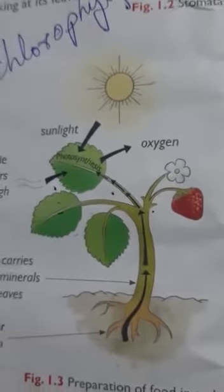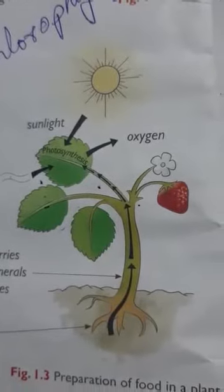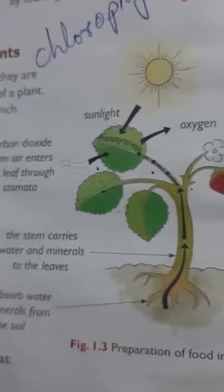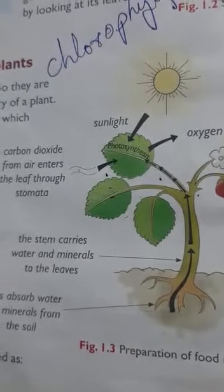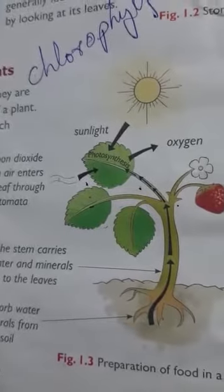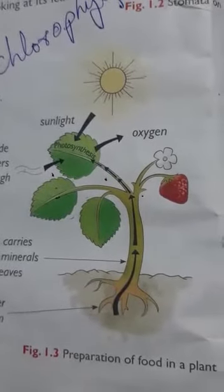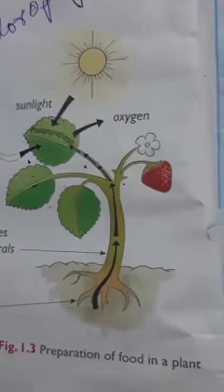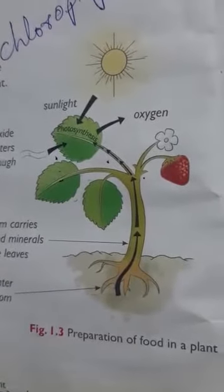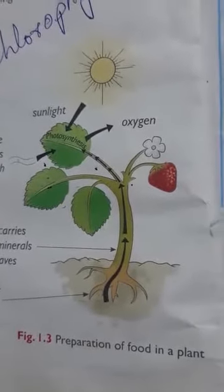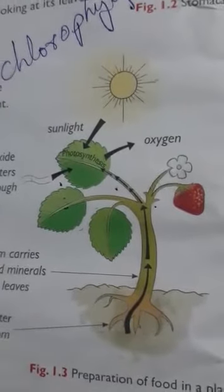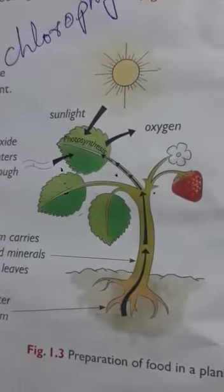The leaf uses carbon dioxide from the air, which enters through the stomata. It also uses water and minerals from the roots. The chlorophyll in the leaves traps solar energy — sunlight — to power the food-making process.